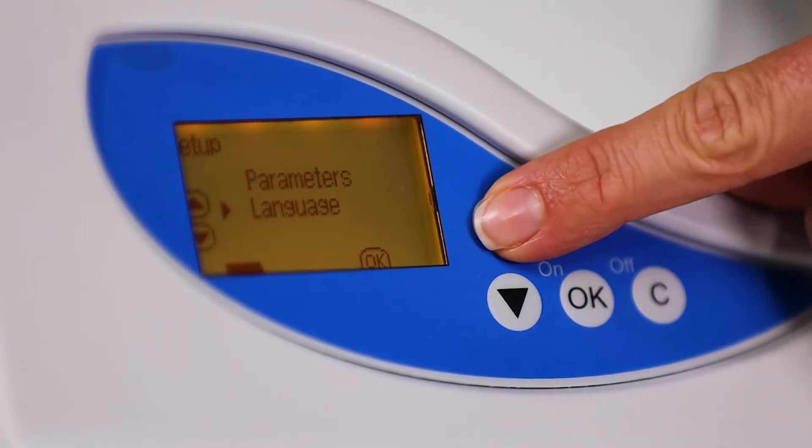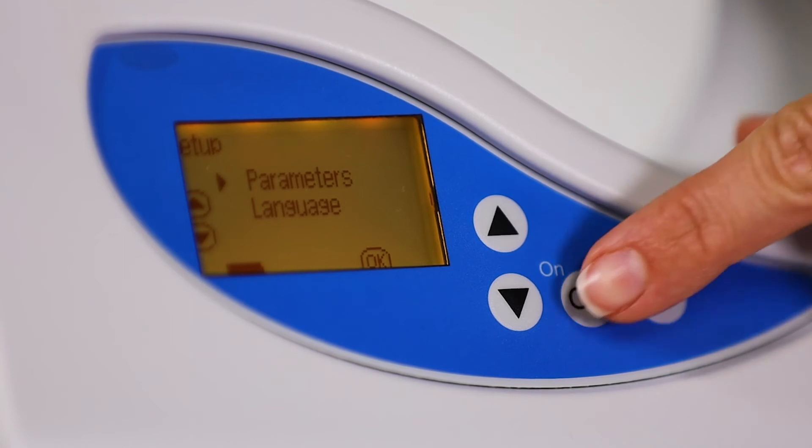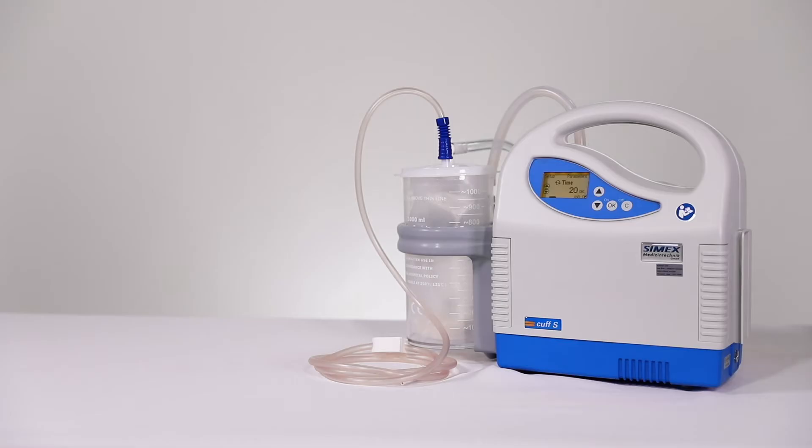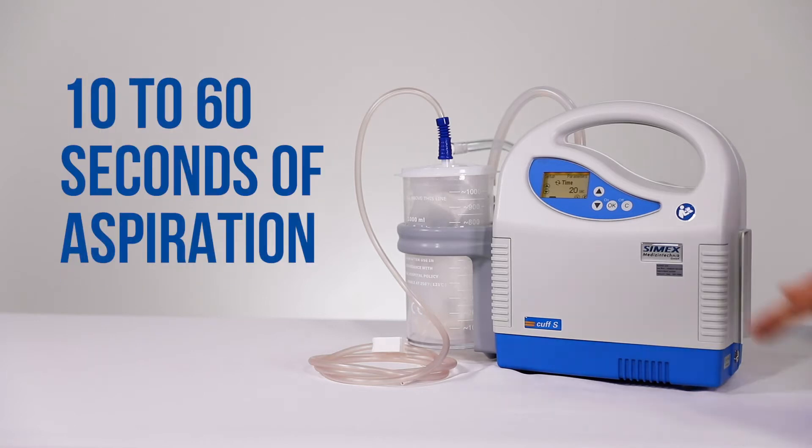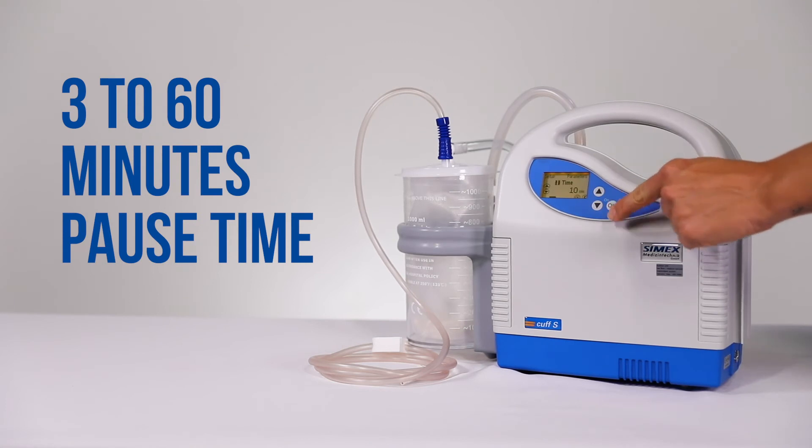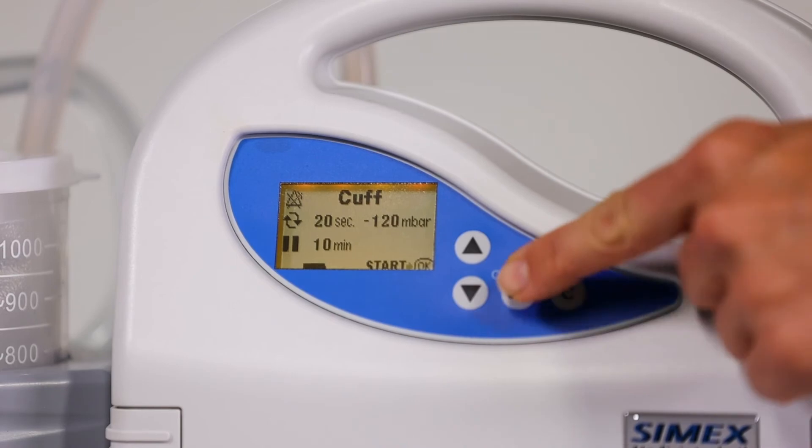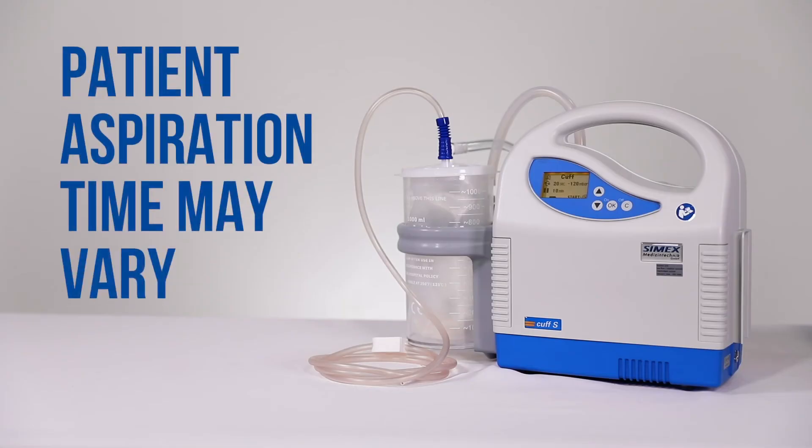Use the arrow button to select parameters and press OK. You will notice the default time is set to 20 seconds. The Cymex has the capability to go from 10 to 60 seconds of aspiration time and 3 to 60 minutes pause time. Set your desired interval time and select OK. Patient aspiration timing may vary based on their secretions. Adjust accordingly.